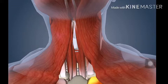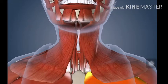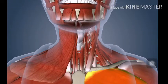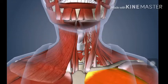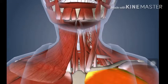Let's dissect again. I'm removing the platysma from this side, and now I'll be removing the sternohyoid, omohyoid, sternothyroid, and thyrohyoid — it's that simple. Here is the thyrohyoid, this is the sternothyroid, this one is the omohyoid, and this one is the sternohyoid.